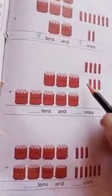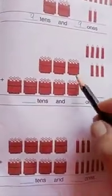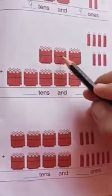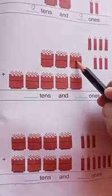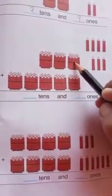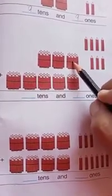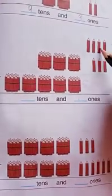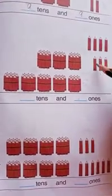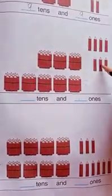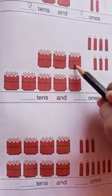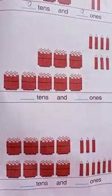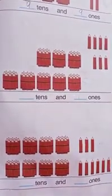Now next question. How many tens are here? One, two, three — there are three tens. And ones: one, two, three, four, five, six, seven — seven ones. Three tens and seven ones means 37.